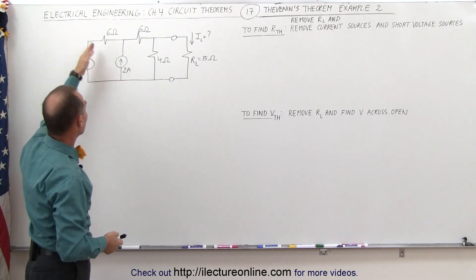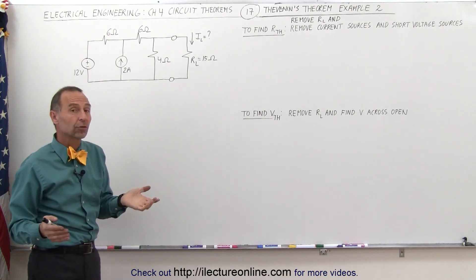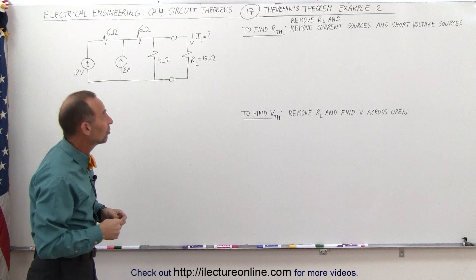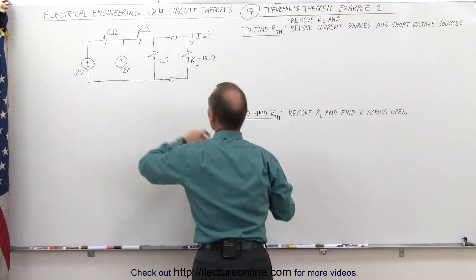Remove all the current sources, and we short out all the voltage sources. The remaining circuit, we'll try to then find the resistance of it. When we do that, we get the following circuit.